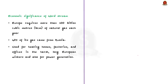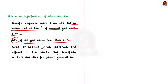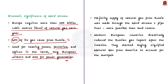Coming to the economic importance of the pipelines — Europe requires more than 100 billion cubic meters of natural gas each year, and of that, 40% of the gas came from Russia before the invasion of Ukraine. This gas is used for heating homes, factories and offices in the harsh, long European winters, and also for power generation. The majority of the supply of natural gas from Russia to Western Europe came through the Nord Stream 1 pipeline, as it was cheaper to transport gas through the pipeline rather than onshore transit routes.